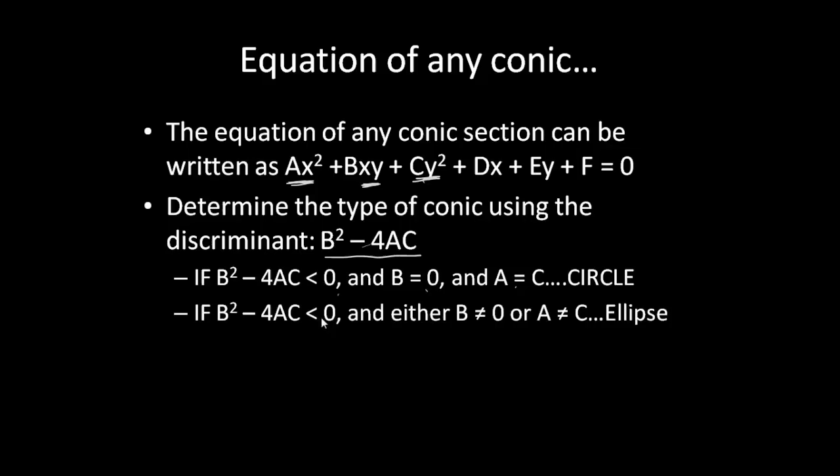Now, if our discriminant is negative and either b isn't equal to zero or a is not equal to c, then we get the ellipse. So if we have a situation where we have a discriminant less than zero, we have to decide between a circle and an ellipse. And to be a circle, b has to be zero and a has to be equal to c. Well, if one of those conditions isn't met, then you know you're going to have the ellipse as opposed to the circle.